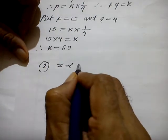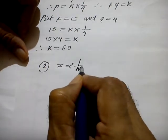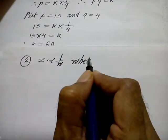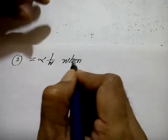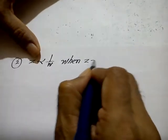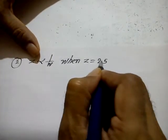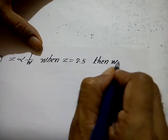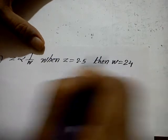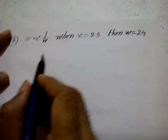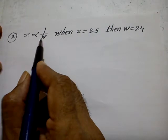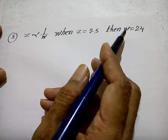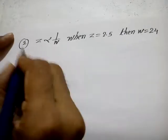Second example: z is inversely proportional to w. Given that z is equal to 2.5, then w is equal to 24. Find the constant of variation and the equation of variation.